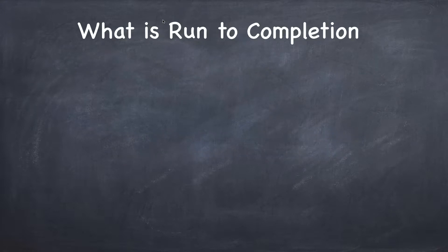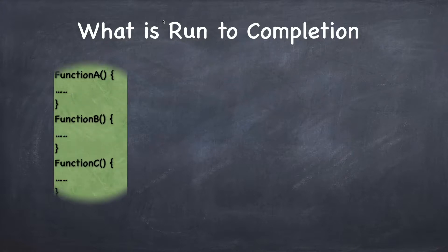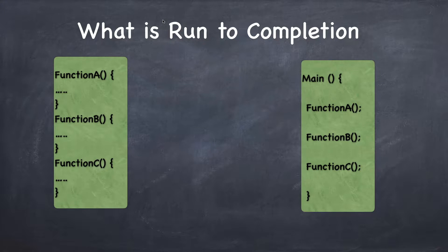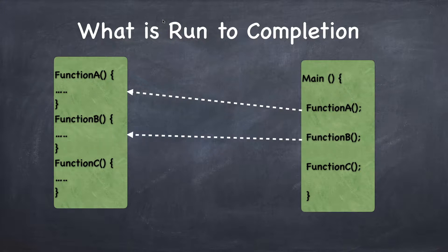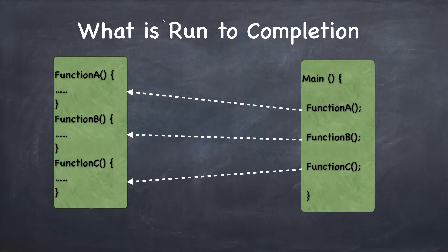First let's understand what is the meaning of 'run to completion'. Let's say I have three functions A, B, C and a main function calling A, B, and C. When function A is called, function A completes before the control comes back to main. Same thing happens with B and C — each has to complete before main can proceed further. Since every function completes, it's called run to completion.